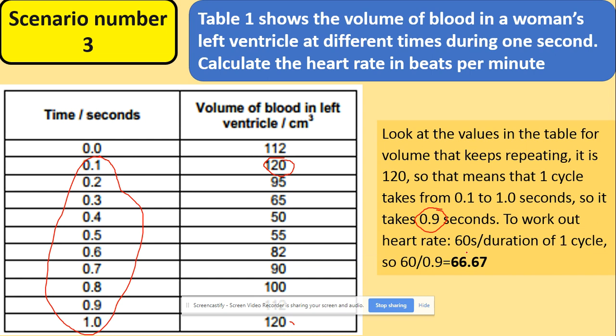Working out the beats per minute, 60 over the length of one cycle. 60 divided by 0.9 gives you 66.67 beats per minute.